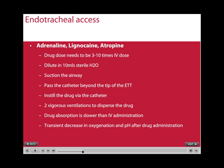The drug must be diluted in 10ml of sterile water. Prior to administering the drug, the airway should be suctioned, and the catheter should be passed beyond the tip of the endotracheal tube. Once that's done, instill the drug via the suction catheter. Afterwards, two vigorous ventilations are needed to disperse the drug into the lungs. Drug absorption will be slower than the IV route, and transient decreases in oxygenation and pH can occur.